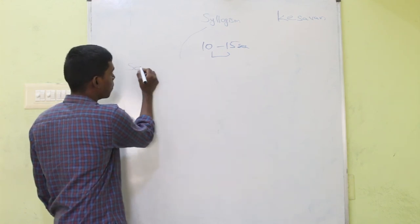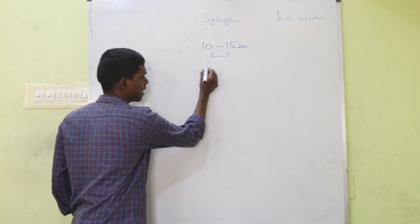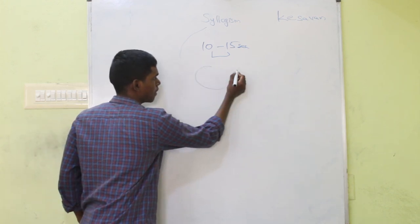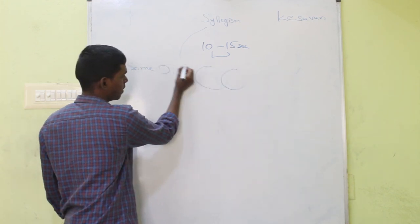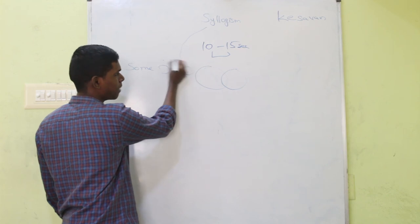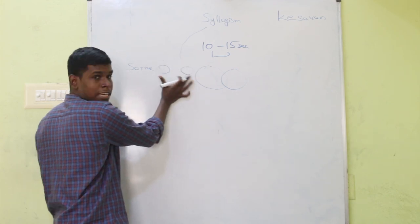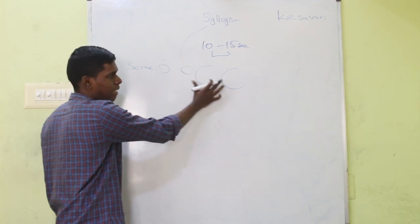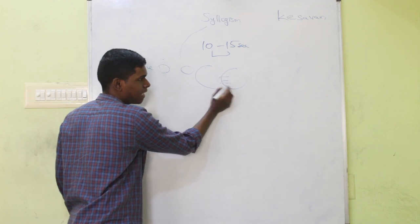So the statement's corresponding diagram is essentially complete. For the 'some' type statement, this is the diagram — irrespective of the words given, one subject is predicated. The 'some' type diagram is the intersection.